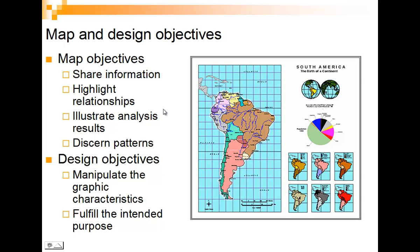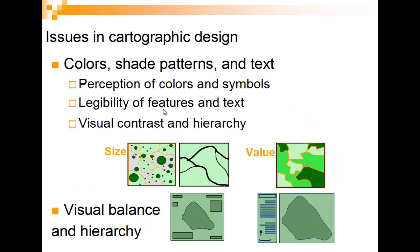In our design objectives, we want to put the graphics so they're easy to read — so anyone from a six-year-old to my grandmother can see what's going on. When we work with cartographic design, we work with colors, shade patterns, and text. We have a type of hierarchy — perception of colors and symbols, legibility, visual contrast, and hierarchy. If we put something in big letters, it's going to be the most important thing. Smaller letters? Less important.